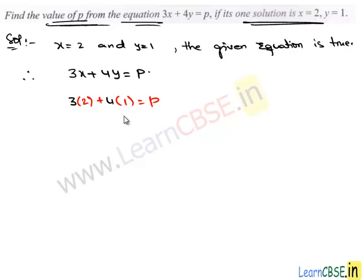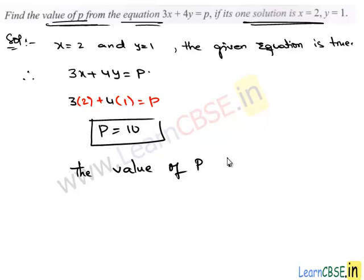On substituting, 3 times 2 plus 4 times 1 equals p. Therefore, the value of p is 6 plus 4, which equals 10. So the value of the unknown p is 10. This completes our solution.